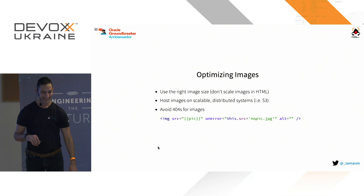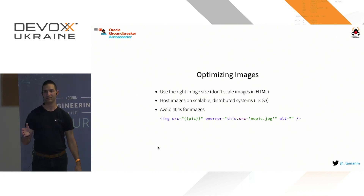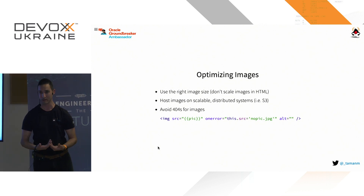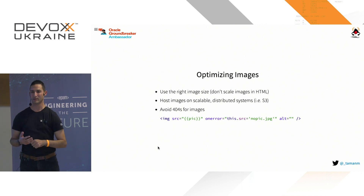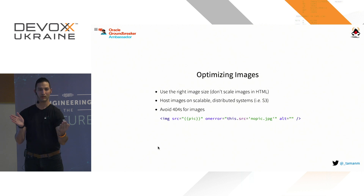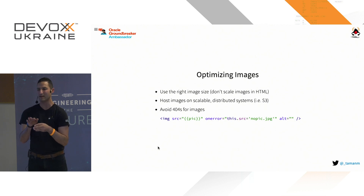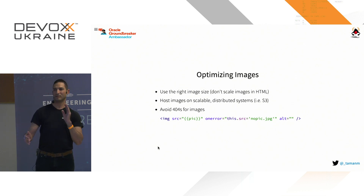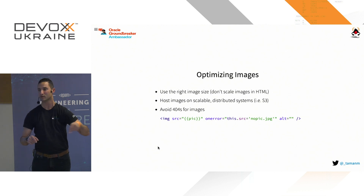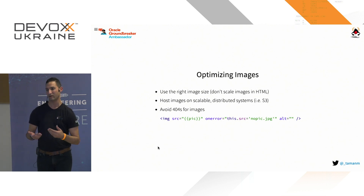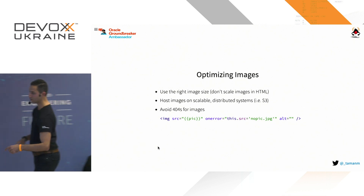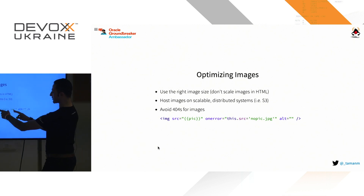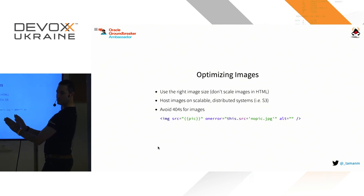For image hosting: always avoid 404 errors for images. You can show a default image whenever there is no image, instead of the broken image icon, until you fix the problem. A broken image gives bad user experience — the user will try to reload again and again. You can use a small script that says: if there is an error loading the image, substitute the source with a default `nopic.png`. It's a five-second fix that makes user experience much better.